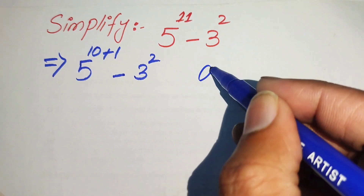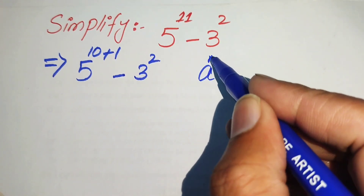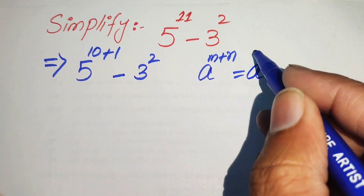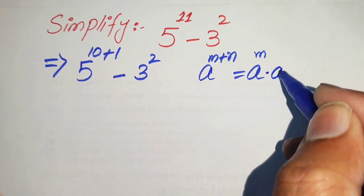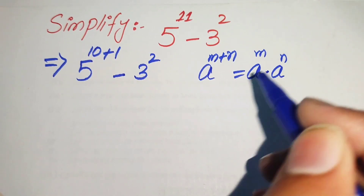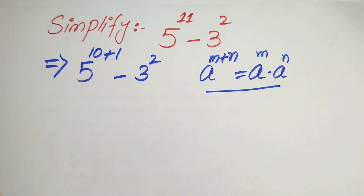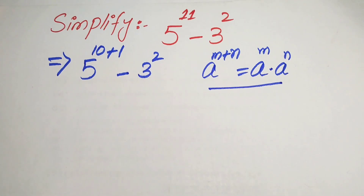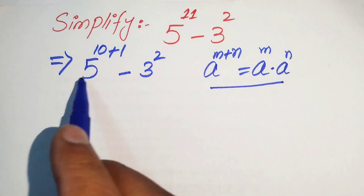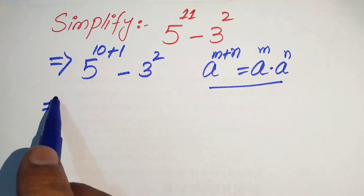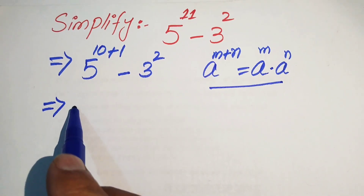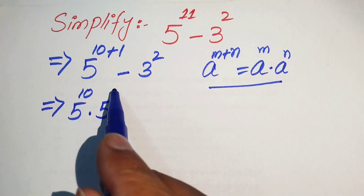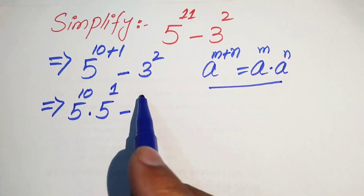We use the exponential rule: a to the power of m plus n equals a to the power of m, multiplied by a to the power of n. We apply this to break the expression and write it as 5 to the power of 10 into 5 to the power of 1.